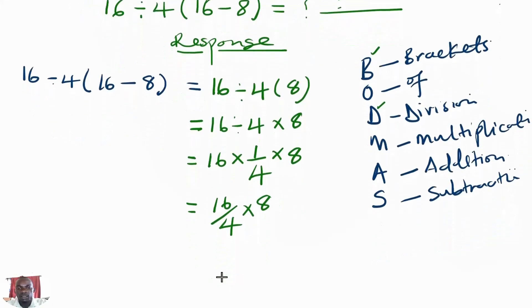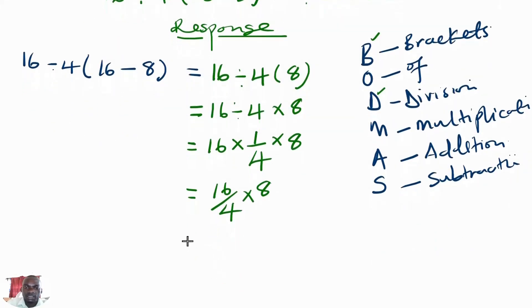As we simplify the expression, we are going to have the 16 divided by 4 to give us the 4, then multiplied by 8. As we multiply 8 by 4, we are getting the answer to be the 32.